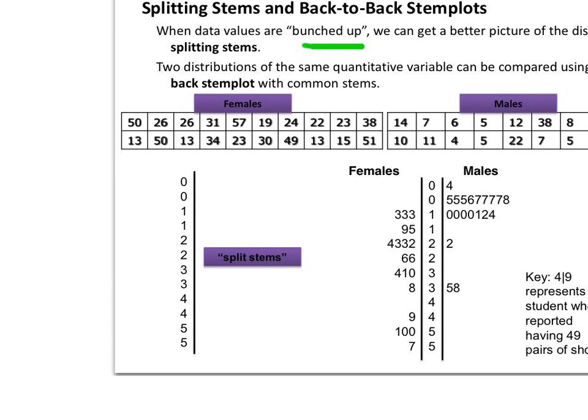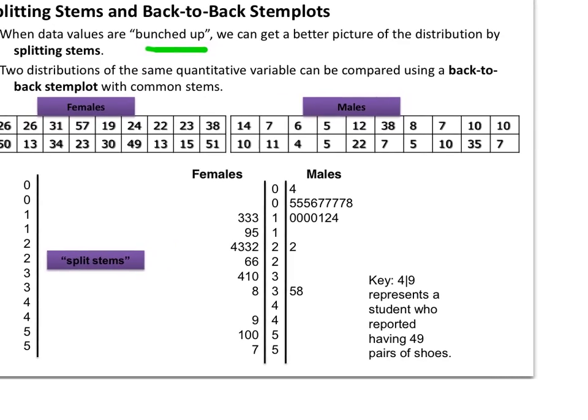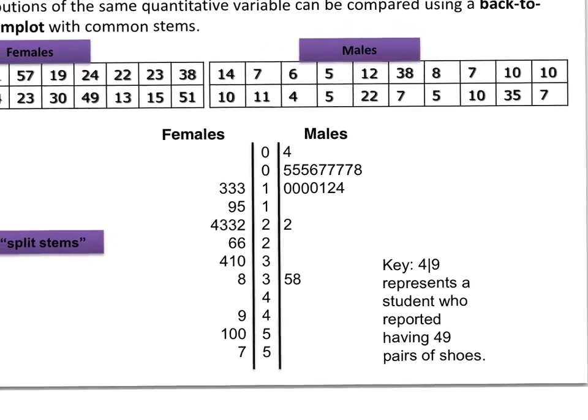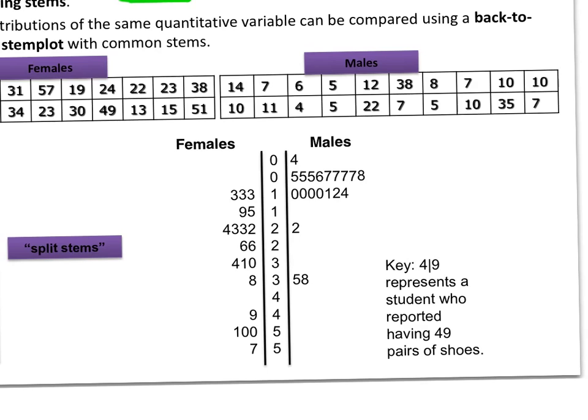Okay and I'm going to put the males on the right side and the females on the left side. So if you notice here I took the male data and put it on the right side again all the zeros to fours here in the first stem, the fives to nines in the second stem, the 10 to 14 in the third stem etc.